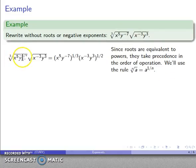So let's take a look at that. I have the cube root of x to the 5, y to the minus 7. That's x to the 5, y to the minus 7 to power 1 third. I have the square root, x to the minus 3, y to the 3. So that's x to the minus 3, y to the 3, power 1 half.